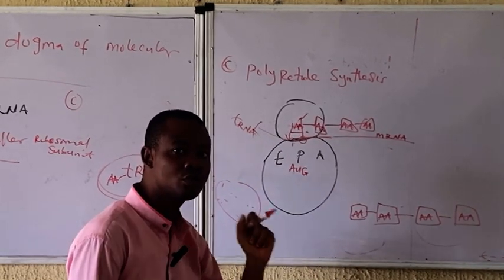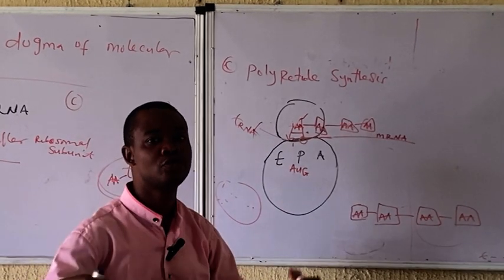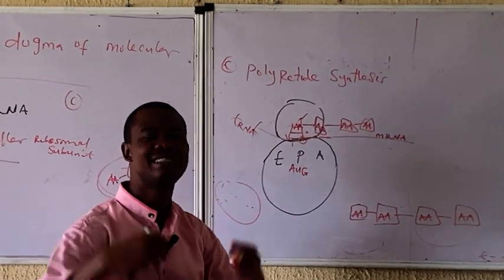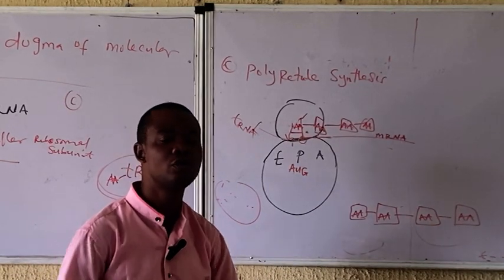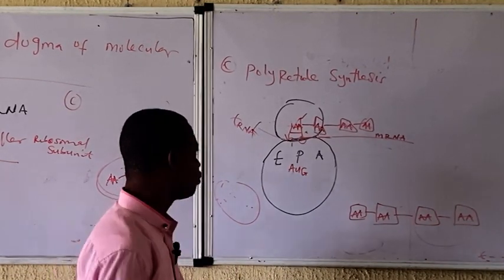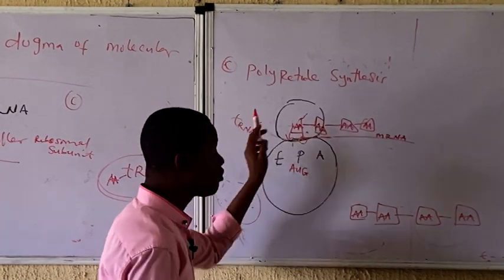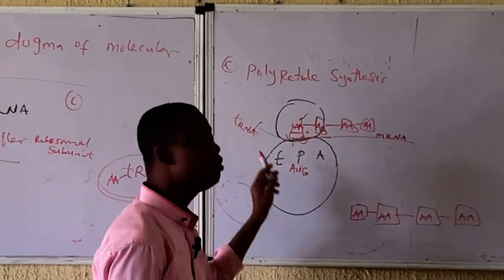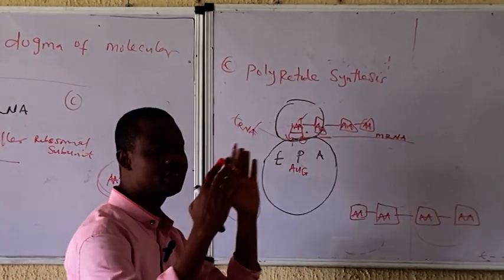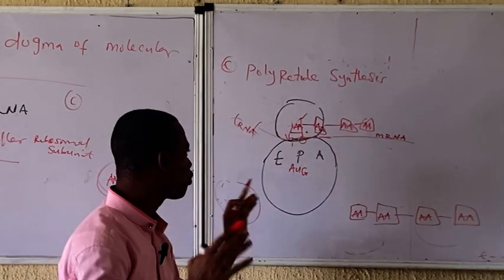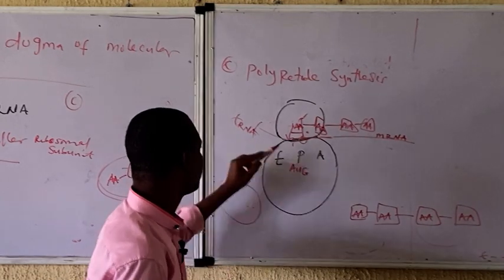The stop codon is also known as the nonsense codon because it does not code for any specific protein. If you don't know what a stop codon is, go and read about genetic codes, where we have the start codon and the stop codon. This process continues until there is a stop codon.